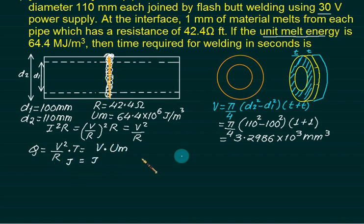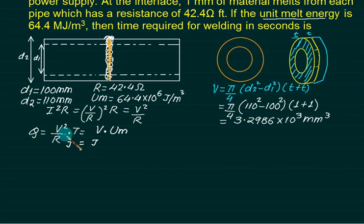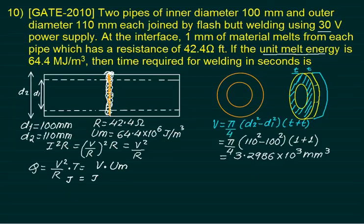And we'll write V multiplied by unit melting energy. Left hand side is joules, so right hand side is also joules. V square, how much is V? Now don't get confused with this V and this V. This one is voltage. We will make it V bar. V bar stands for volume. Capital V stands for voltage.